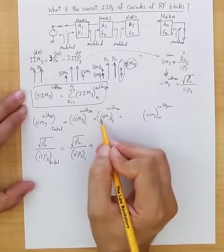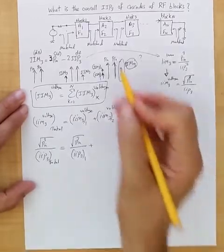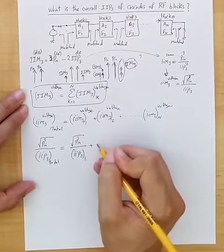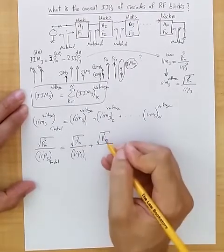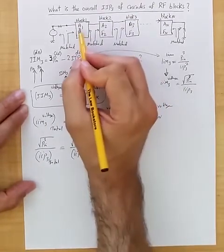Plus the input referred intermodulation product of third order due to block 2, but input referred to the beginning of, to the input of block 1. So that would be as if power Pn is applied, but then that power is amplified by A squared.